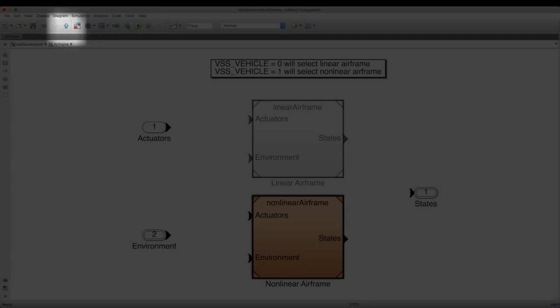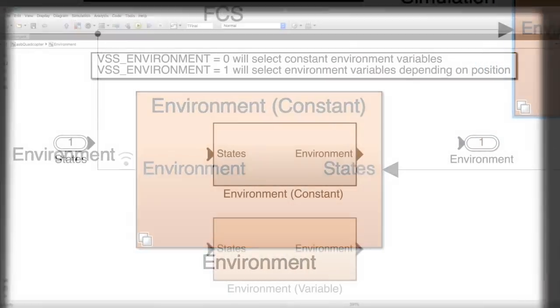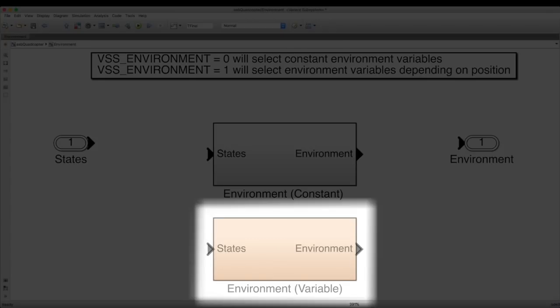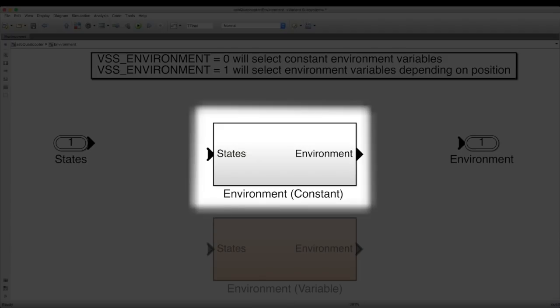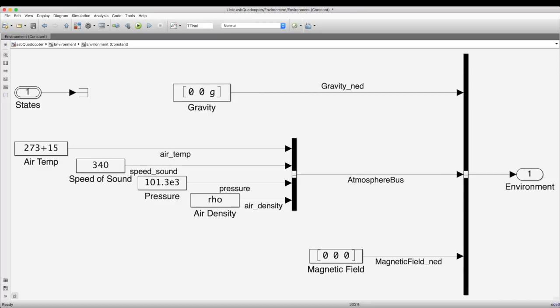Let's go back up to the top level of the model and go into the environment block. Here, again, it's a variant subsystem. We have the option of choosing constant environment variables or variables that change based on position. We're going to select the constant variables because things like gravity and air pressure aren't really going to change between ground level and hovering at less than a meter.